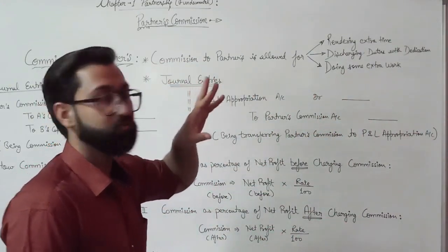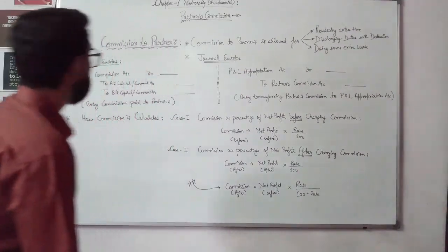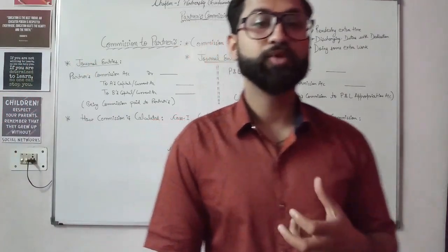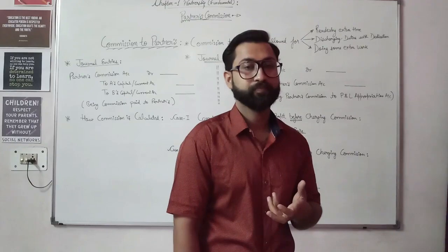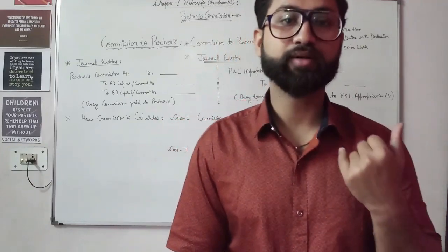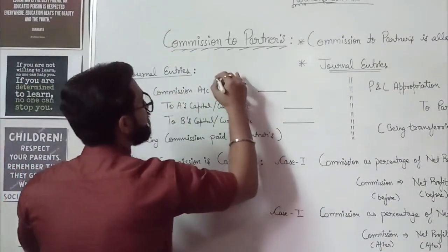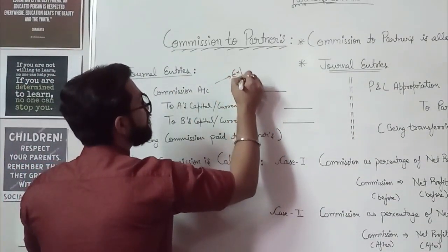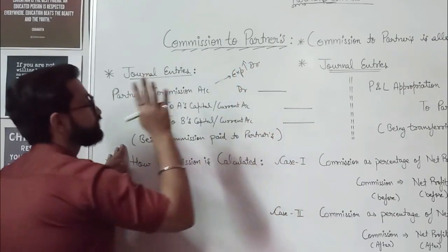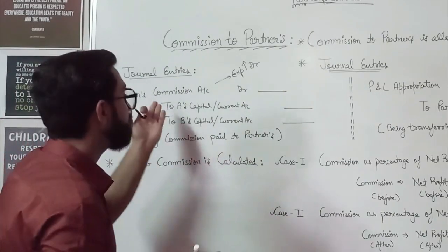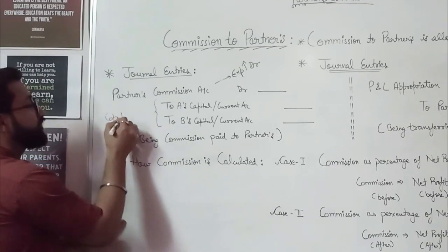There are many reasons for which commission can be given, but these are the main reasons. Now, what are the general entries? Commission is an expense for the firm and income for the partners. If it is an income for the partners, it will increase partners' capital. Partners' commission is an expense for the firm — if expense increases, it is debited. It is an income for the partners, so partners' capital will be credited.